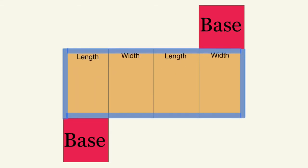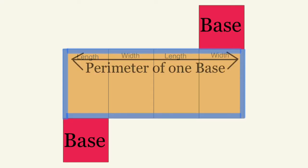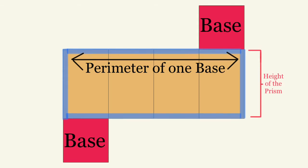Now because the individual rectangles are the length and the width of the base, it's actually the perimeter of the base would be the length of that entire rectangle and then the height of the prism which we just talked about is the width of that rectangle.